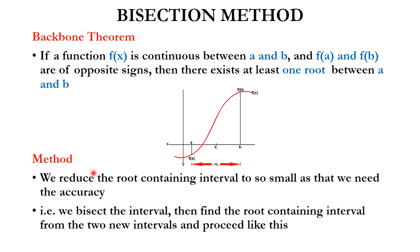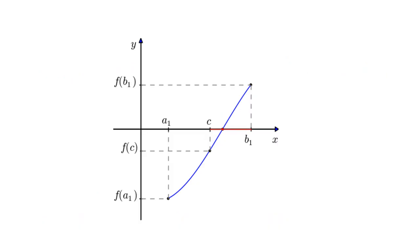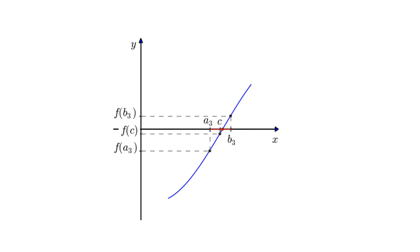The method works by reducing the root-containing interval until it is as small as the required accuracy. We bisect the interval, then find the root-containing interval again from the two new intervals, and proceed like this. This bisection animation shows the intervals being bisected step by step.